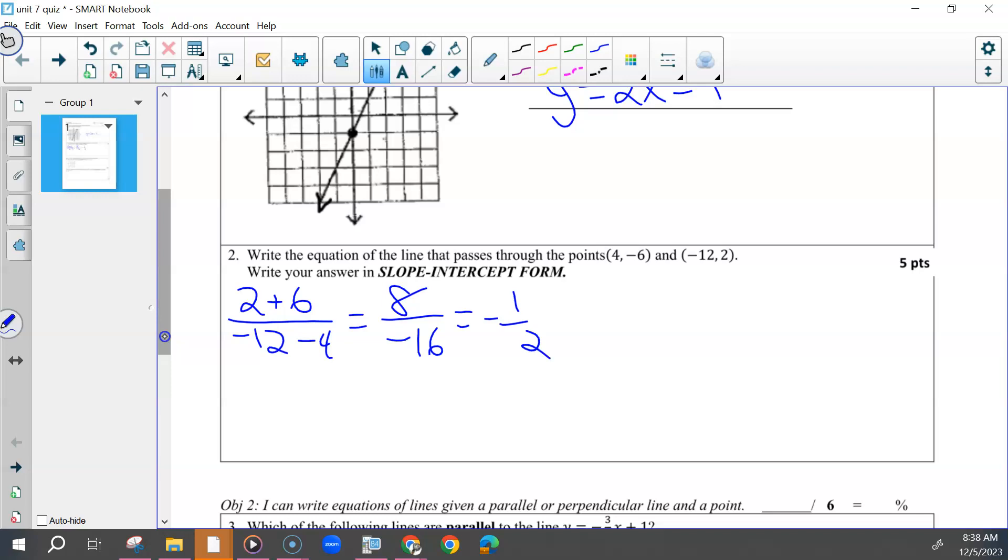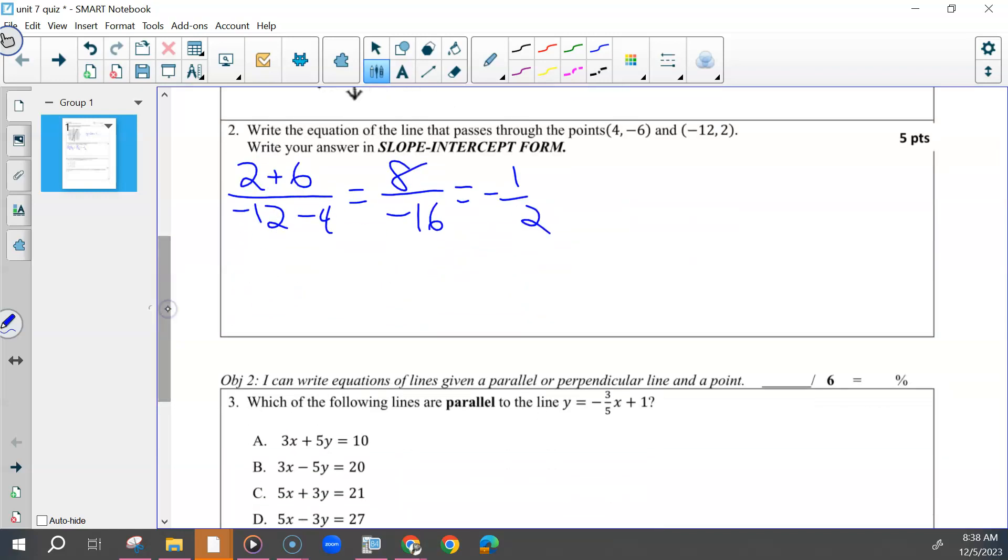And then after you found your slope, you had a choice. Choose either of these points, it doesn't matter which one. Many of you used this one, but some of you did use the second one. I'll use it first. So that would be y minus negative 6, and then you would change to put plus, or just start off y plus 6 equals negative 1.5 times x minus 4.